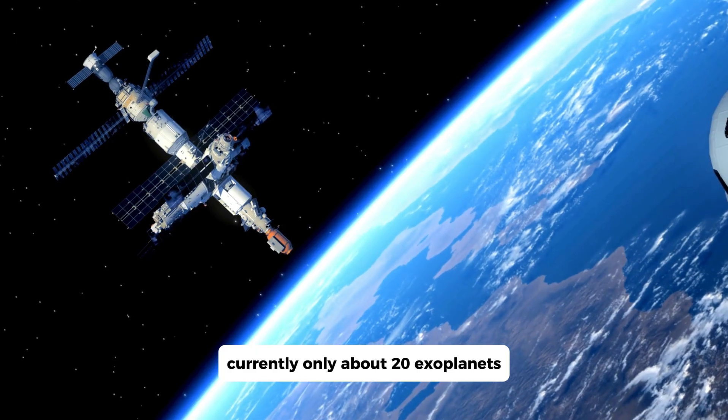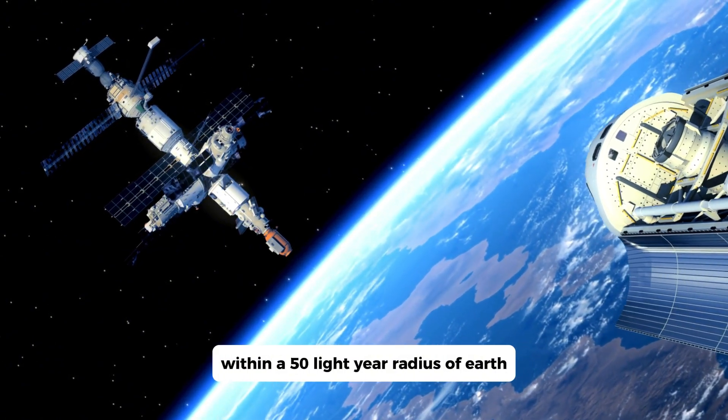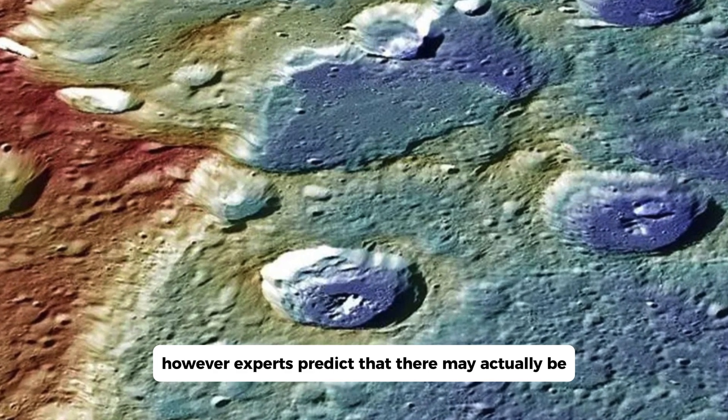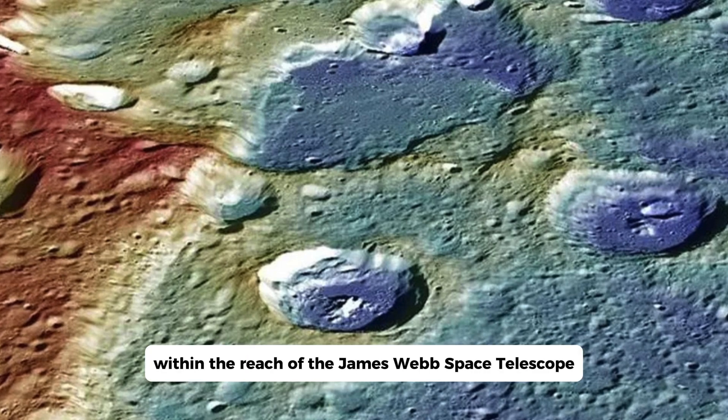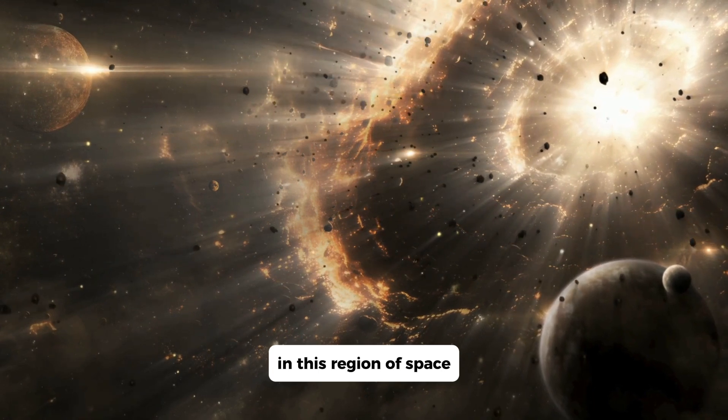Currently, only about 20 exoplanets have been officially discovered within a 50 light-year radius of Earth. However, experts predict that there may actually be as many as 4,000 exoplanets within the reach of the James Webb Space Telescope, based on the number of suspected stars in this region of space.